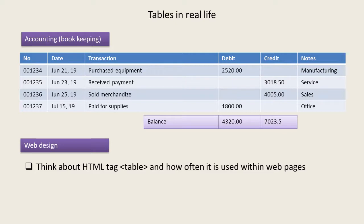Another interesting example of table use — not related to databases — showing the power of the table is web design. Those familiar with web design certainly know that there is a table tag within the HTML language. This table tag represents a table, but this time it's not used for keeping data — it's mostly used for rearranging objects on a page. A page with a table tag has a nice, accurate, and well-ordered layout, used to arrange pictures, text fragments, and controls on the page.